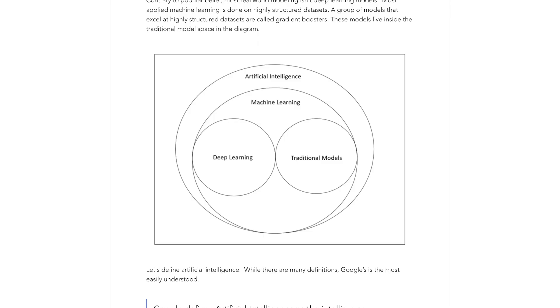The word 'applied' here means the real world. Let's check out this diagram. The diagram is often referred to as the AI hierarchy. The top level of the AI hierarchy is artificial intelligence, and inside that is machine learning. Inside machine learning is deep learning and traditional models. I'll put a link down below this post on the AI hierarchy, and I'd highly recommend that you read it and memorize the definitions.